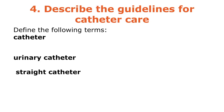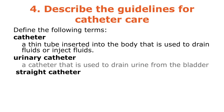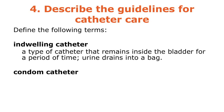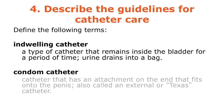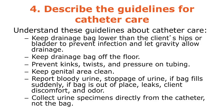A catheter is a thin tube inserted into the body to drain or inject fluids. A urine catheter drains urine from the bladder. A straight catheter is removed immediately after urine is drained. An indwelling catheter remains inside the bladder and drains into a bag. A condom catheter — also called an external or Texas catheter — attaches to the penis and looks like a condom.